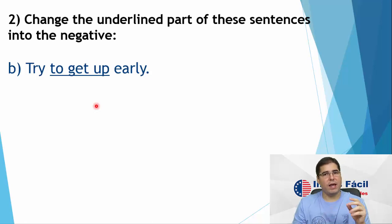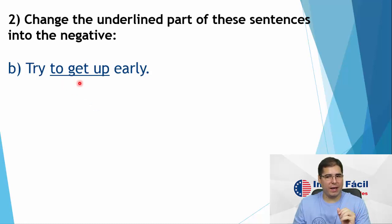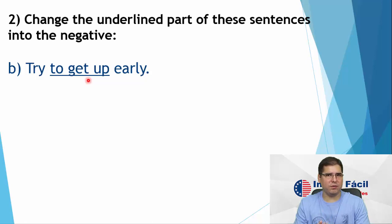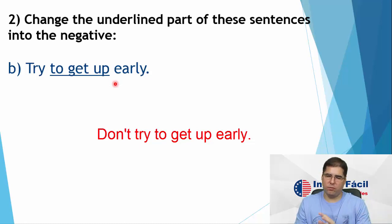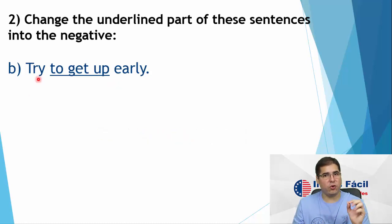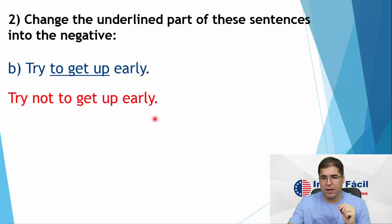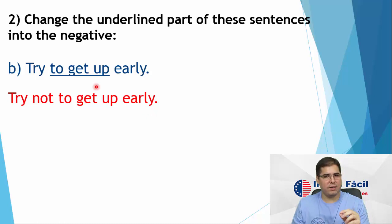Now I want to make the negative only in the infinitive part. 'Try to get up early' — I don't want to say 'Don't try to get up early.' I want to say 'try' in the affirmative, but make the infinitive negative. How? 'Try not to get up early.' Now we have the negative in the infinitive part of the sentence.